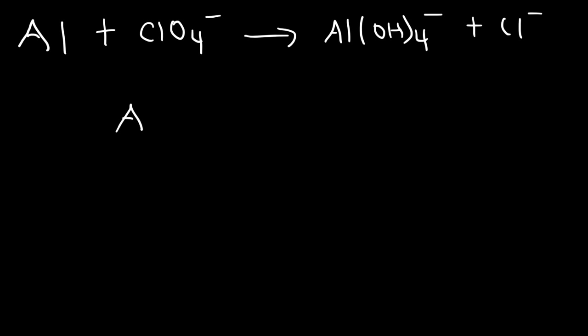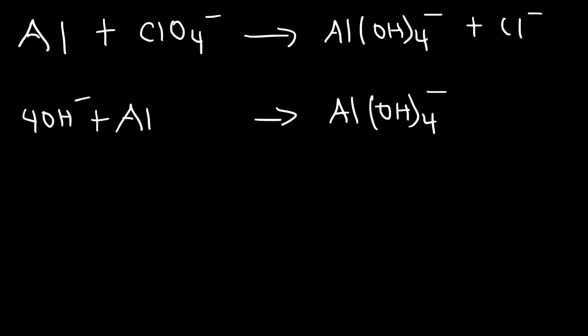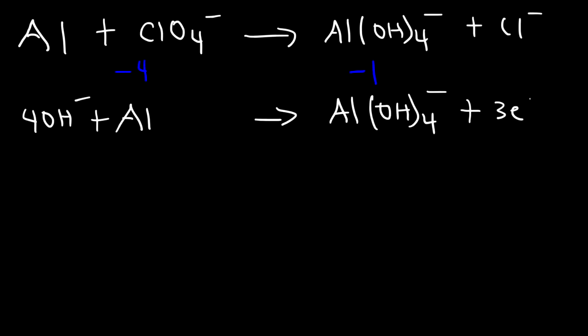Let's start with the first half reaction: aluminum produces the aluminate polyatomic ion Al(OH)₄⁻. To balance the number of atoms, we add four hydroxide ions to the left side — now the particles are balanced. To balance the charge: the total charge on the right is negative one, and on the left it's four times negative one, or negative four. These two numbers differ by three, and since negative one is higher on the number line, we add three electrons to the right side. The charges are now balanced: negative one plus negative three equals negative four on the right.